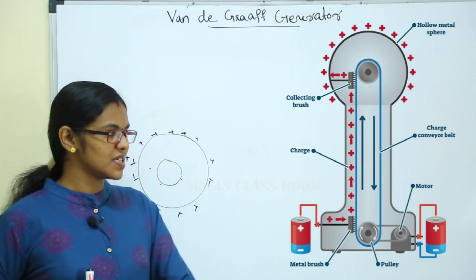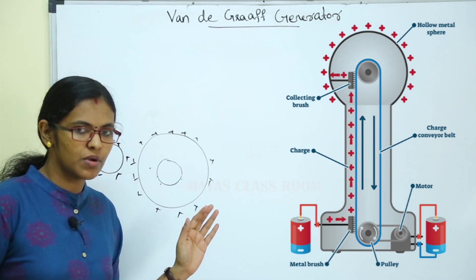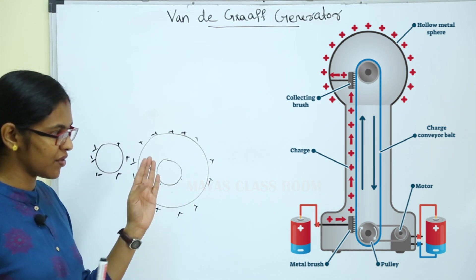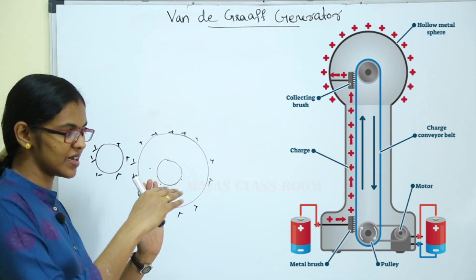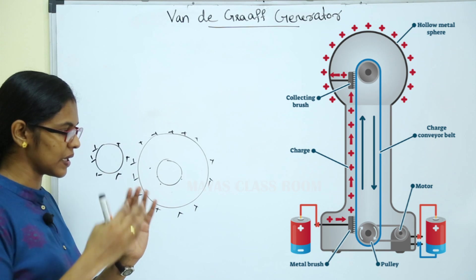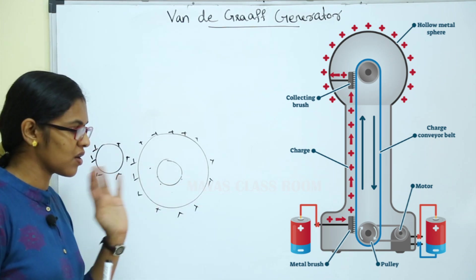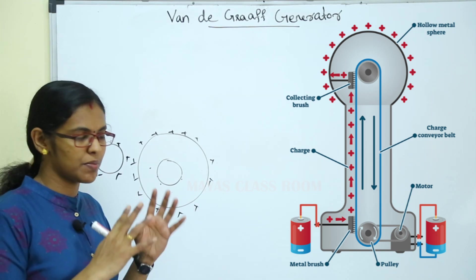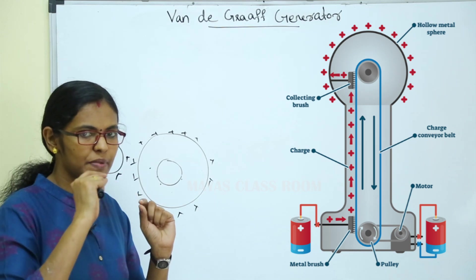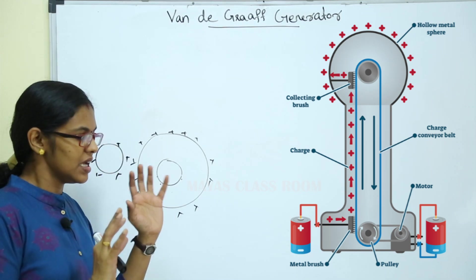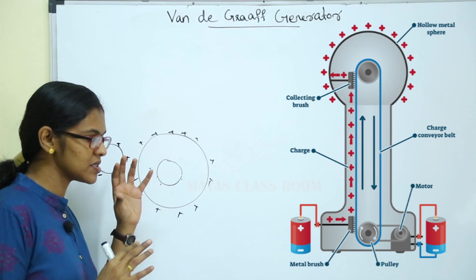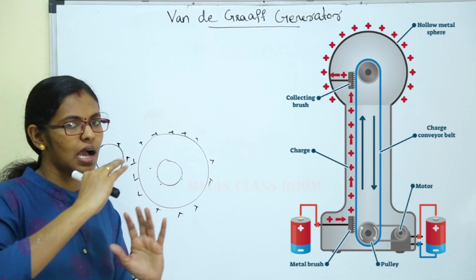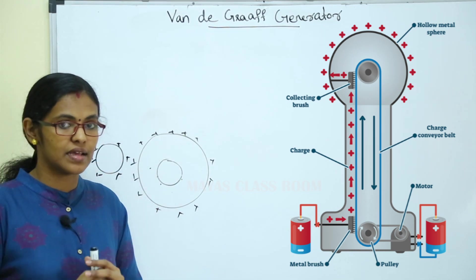Now we are working on the Van de Graaff generator. We use a spray comb. The spray comb is at 10 kV high potential. We use high potential positive charges. It has sharp edges, which cause a discharging action, and positive ions are produced.